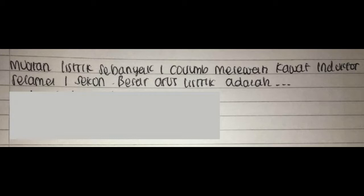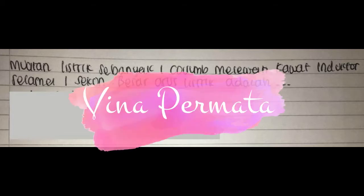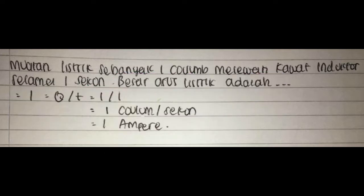Soal 1: Muatan listrik sebesar 600 coulomb mengalir selama 1 menit pada suatu penghantar. Besarnya arus yang mengalir adalah? Jawaban: 600 dibagi 60 sama dengan 10 ampere.